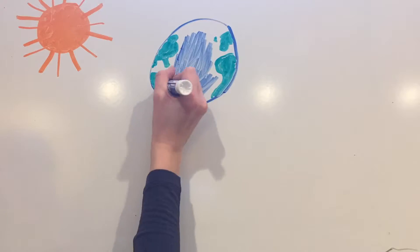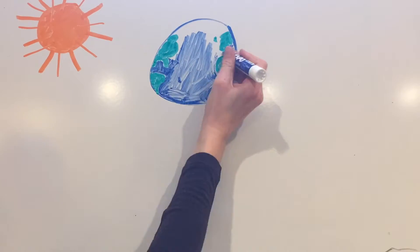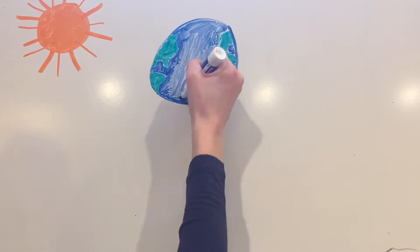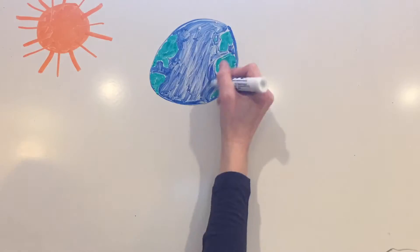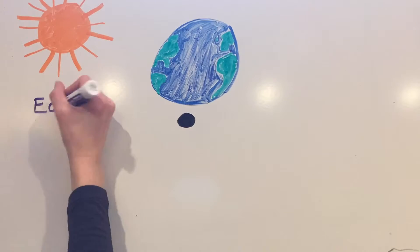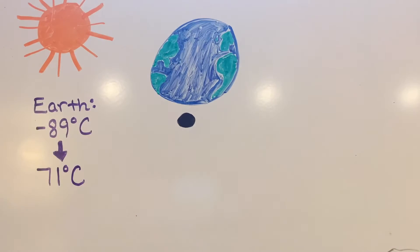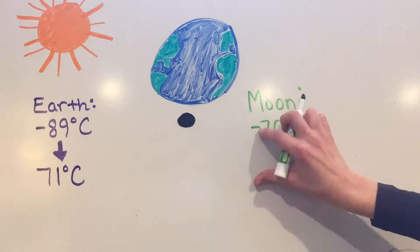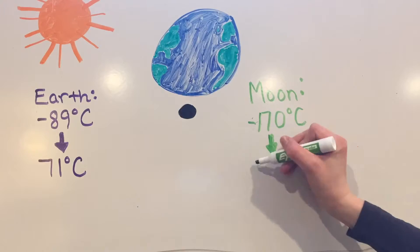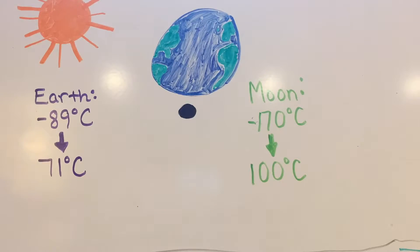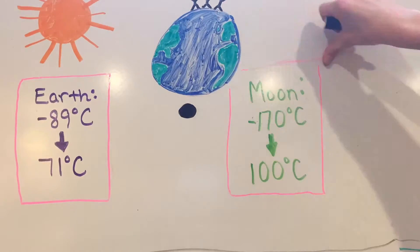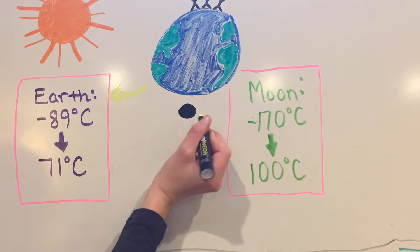While the Moon and the Earth are relatively the same distance from the Sun, they differ dramatically in temperature. The lowest temperature ever recorded on Earth was negative 89 degrees Celsius, and the highest ever recorded was 71 degrees Celsius. In contrast, on a daily basis, the Moon fluctuates between negative 170 and 100 degrees Celsius. So what causes this difference?